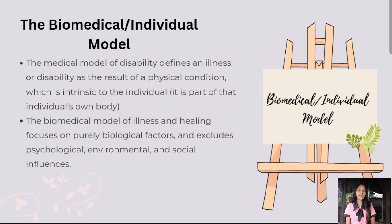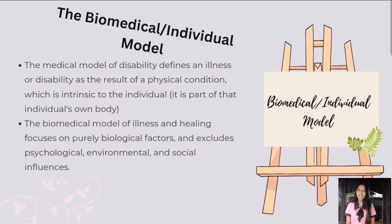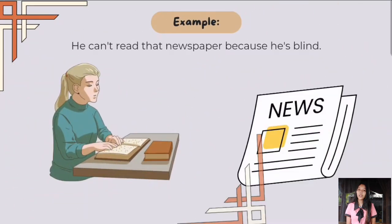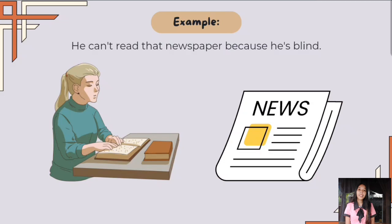In this model, disability is viewed as an illness or trauma, and professional help is provided or controlled. This model ignores the full range of concerns associated with disability, and people with disabilities are viewed as unfortunate. For example, he can't read the newspaper because he's blind. The person is blind maybe since birth or because of an accident. People may say that he is unfortunate because he cannot see. In this kind of disability, professional help is provided.